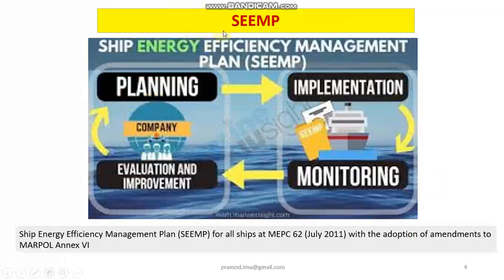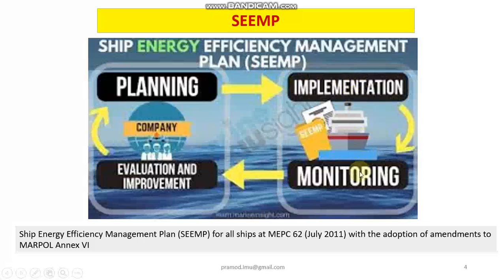As a result, IMO came out with what is called the Ship Energy Efficiency Management Plan. This plan can be divided into 4 stages: first, you plan how to reduce pollution and environmental impact while meeting the energy requirements of a ship; second, you implement this plan according to set standards; third, you monitor whether implementation is proceeding as planned; and finally, any evaluation or improvement is reflected back into the planning stage.